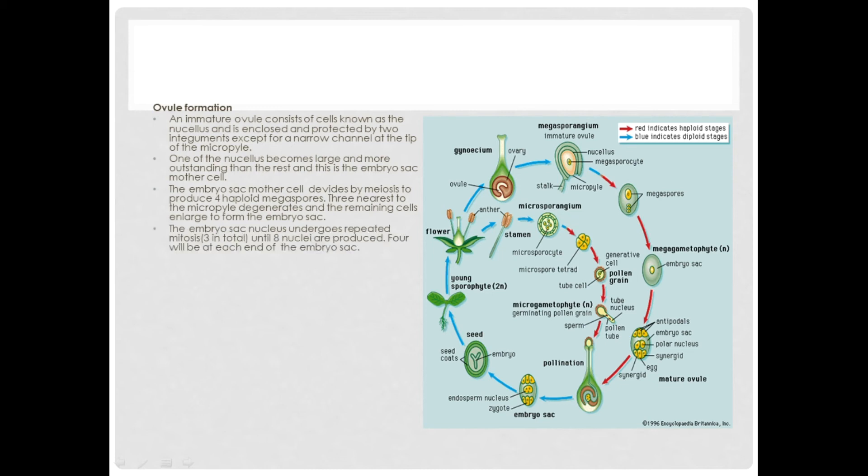The embryo sac nucleus undergoes repeated mitotic division, three in total, until eight nuclei are produced. Four will be at each end of embryo sac. This embryo sac nucleus divides three times by mitosis until eight nuclei are produced, four at each end.